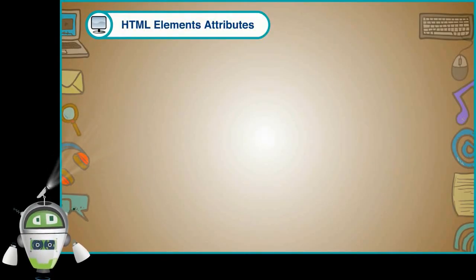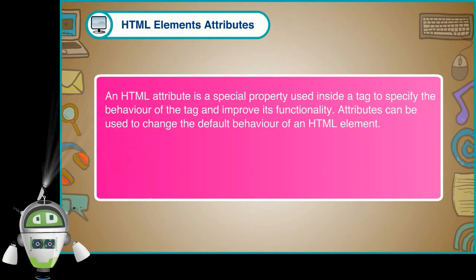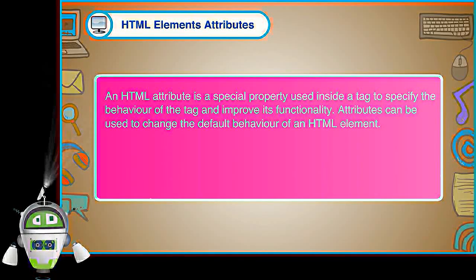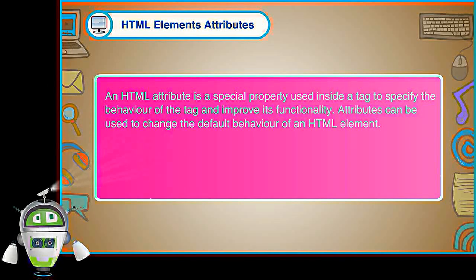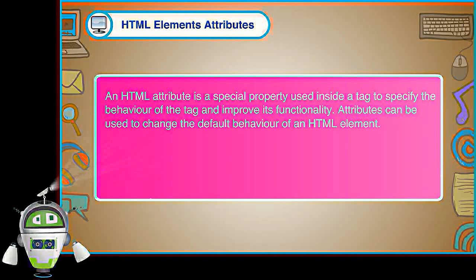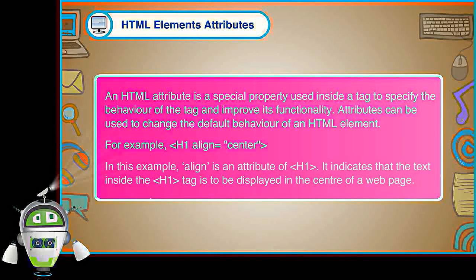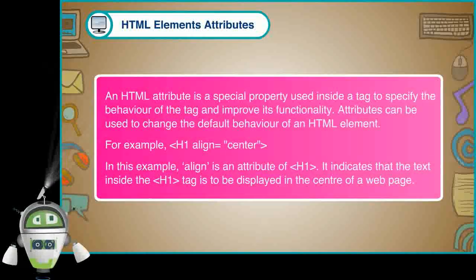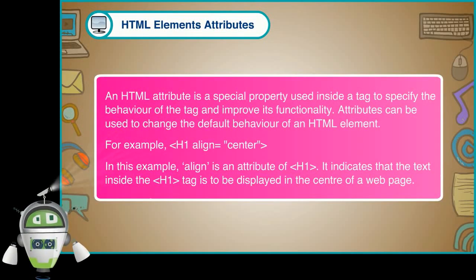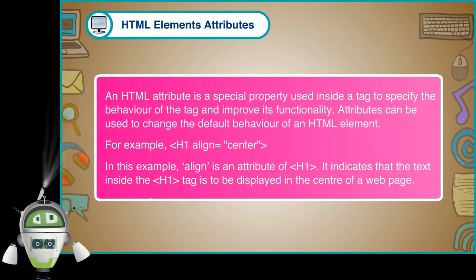HTML element attributes: An HTML attribute is a special property used inside a tag to specify the behavior of the tag and improve its functionality. Attributes can be used to change the default behavior of an HTML element. For example, &lt;H1 align="center"&gt;. In this example, 'align' is an attribute of H1. It indicates that the text inside the H1 tag is to be displayed in the center of a web page.